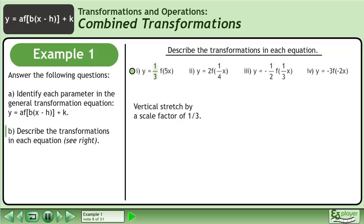a equals 1 over 3. This is a vertical stretch by a scale factor of 1 over 3. b equals 5. This is a horizontal stretch by a scale factor of 1 over 5, since we use the reciprocal for horizontal stretches.